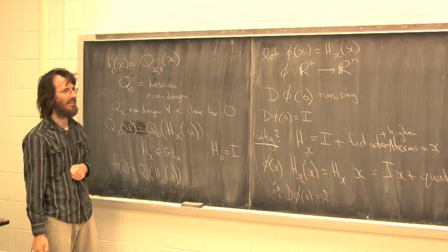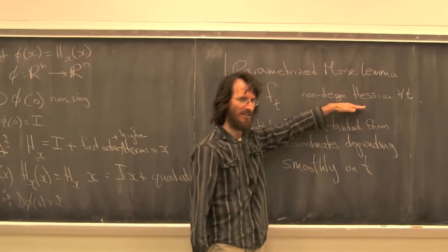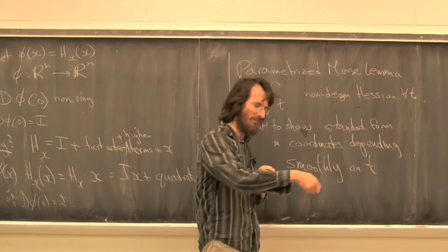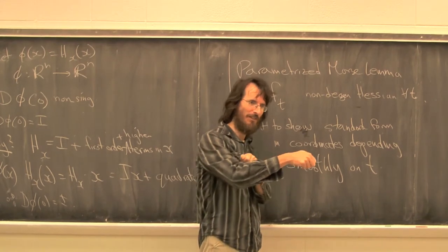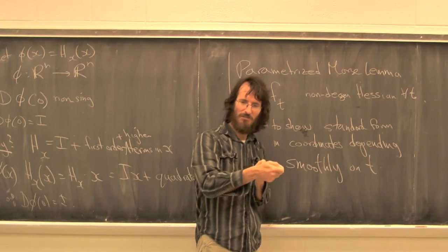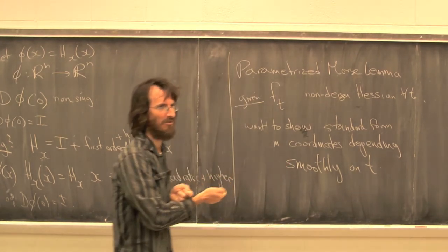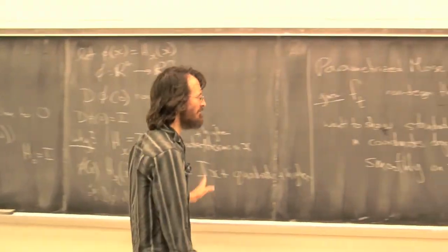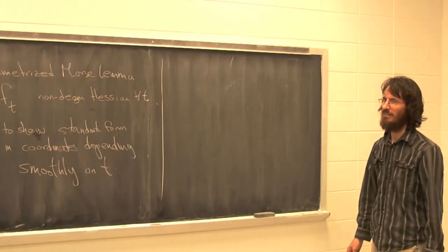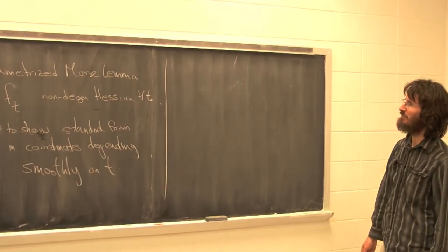An easier way is to step back and recognize that the non-degenerate Hessian is a transversality condition, so the critical points become transverse points of intersection. Then if a point is moving around in the domain, you can find a one-parameter family of diffeomorphisms that makes it not move — by any kind of ambient isotopy that you precompose with. You need that to get started for a parametrized Morse lemma.